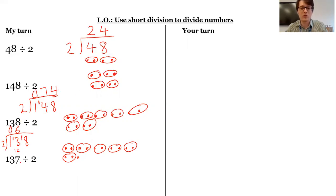How many times does two go into 18? Well, rather than draw dots this time, I'm going to count up in my twos. Two, four, six, eight, 10, 12, 14, 16, 18. That is nine times. Two goes into 18, nine times. 18 divided by two is nine. So the answer to this question is 69.